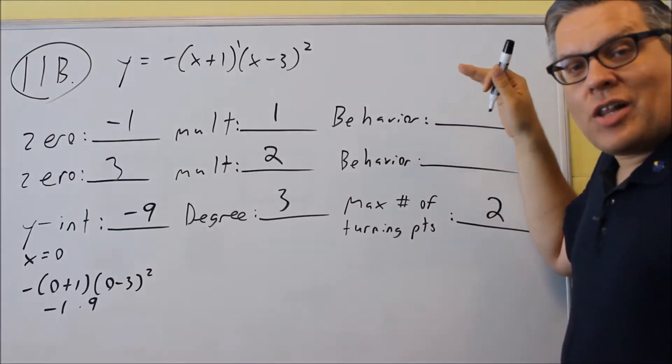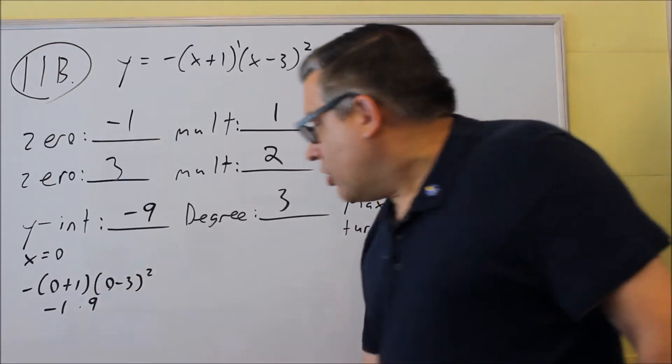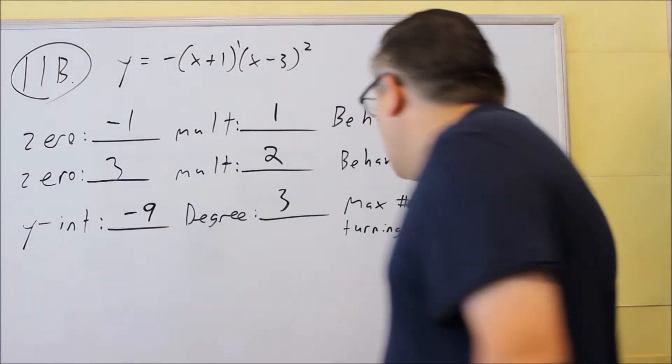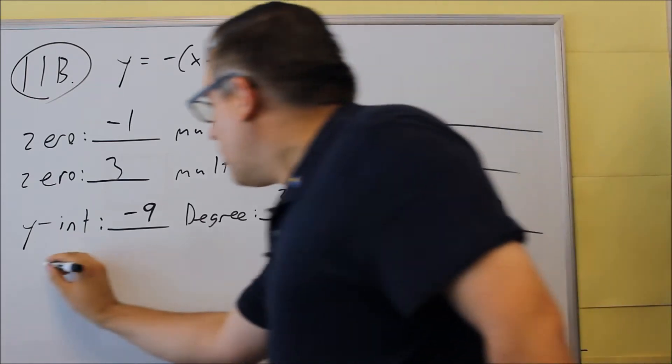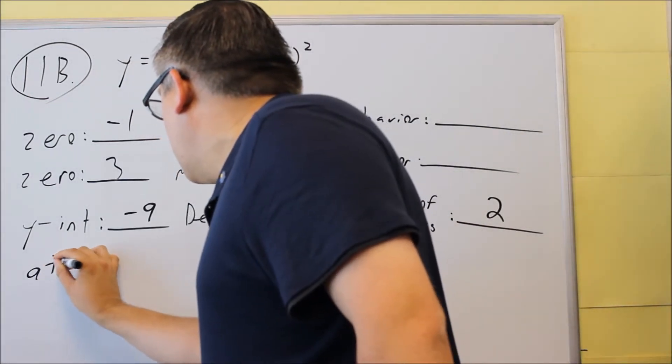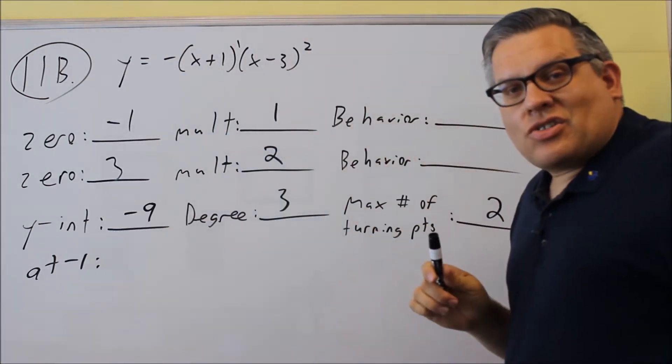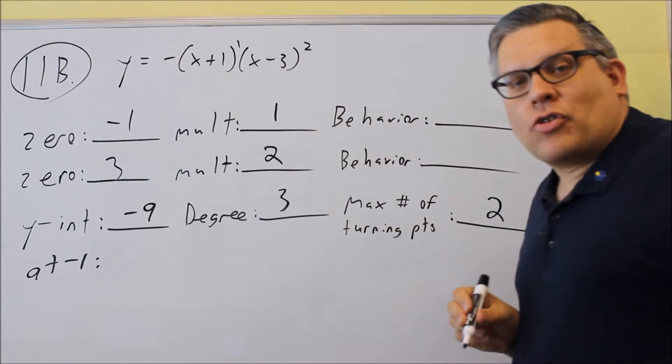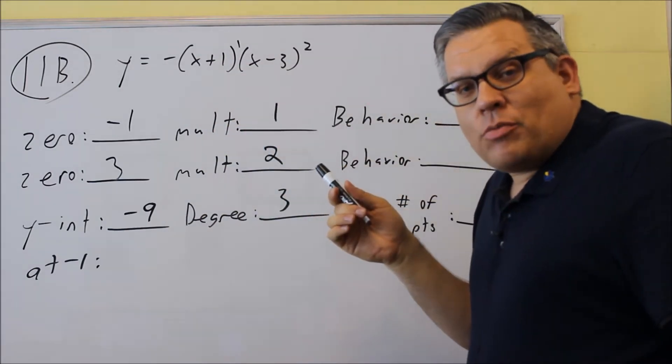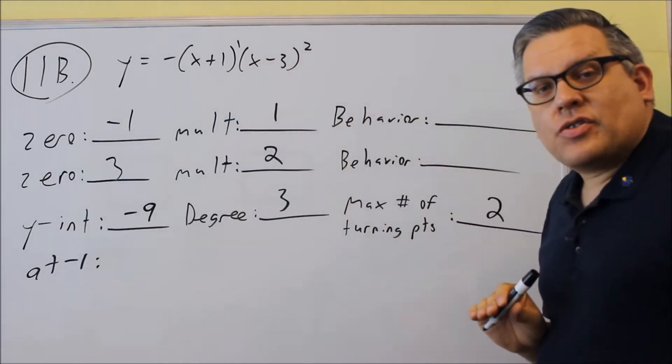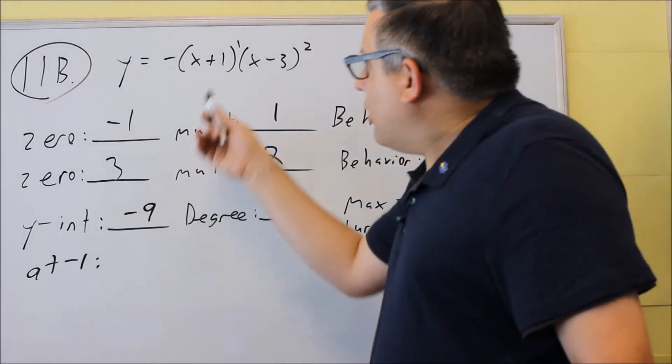Now the next thing we have to do is find the behavior at each of the zeros. I'm going to erase this so you have some space below to do the behaviors. The way we do this is you put the zero value in for all the x's except for the one that gave you the zero in the first place. In other words, you don't want to put negative one into where you originally got the zero from because otherwise it zeroes everything out. Your behaviors are never going to be equal to y equals zero.